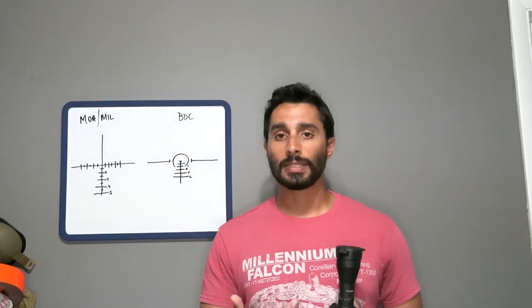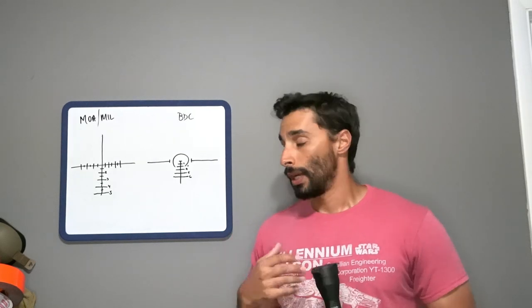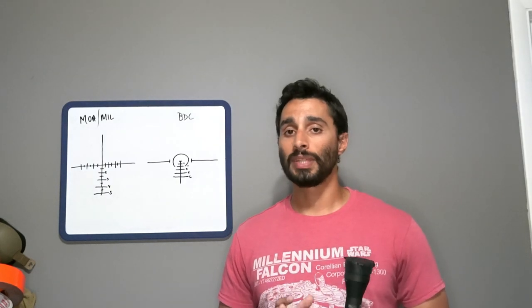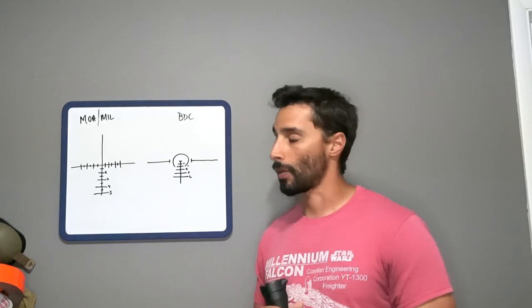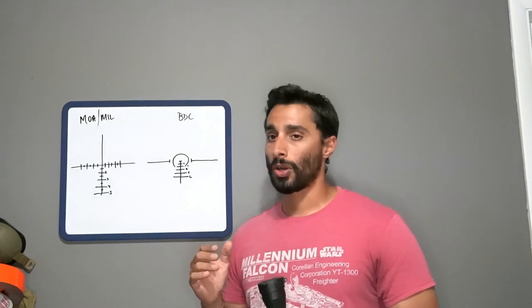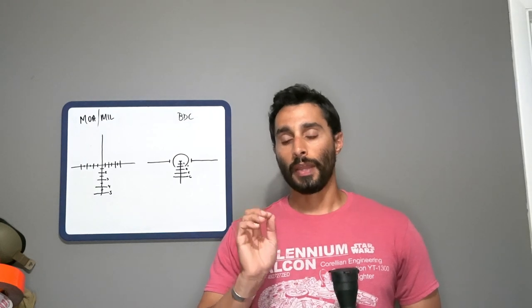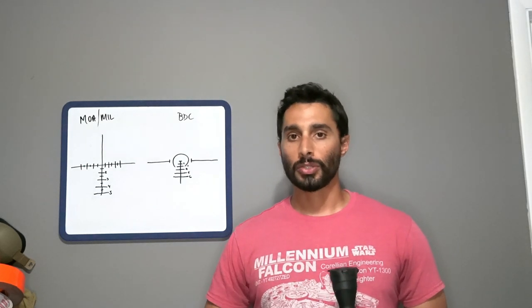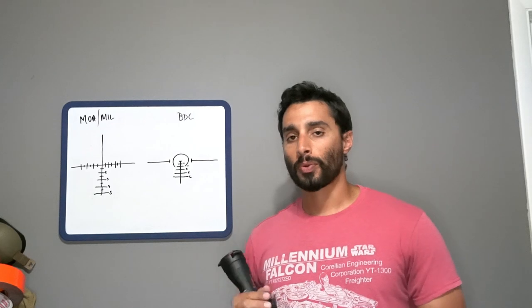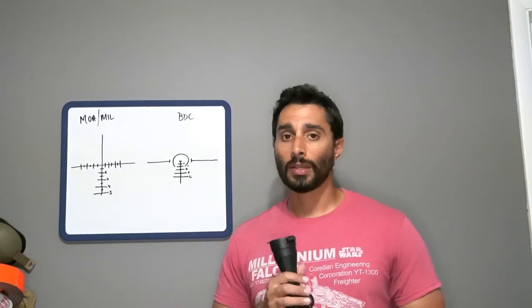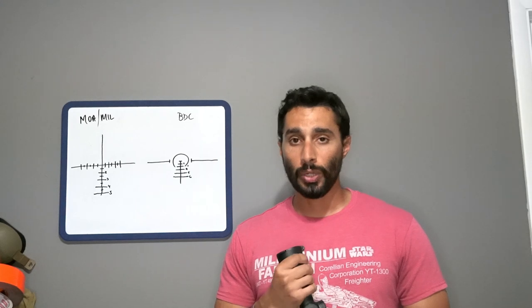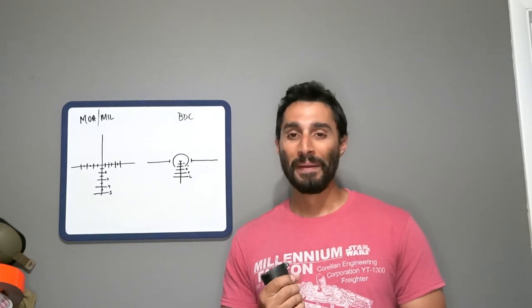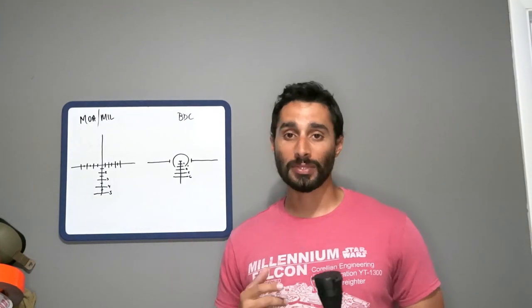When it comes to a BDC or bullet drop compensator, there are a few differences that people need to understand when they start thinking about getting one. BDCs are usually measured or pre-measured for 100, 200, 300, 400, and so on yards. The problem with BDCs is it's not rated to you, your gun, your eyes, your scope height, or your ammo.